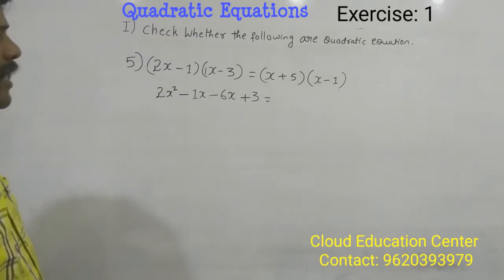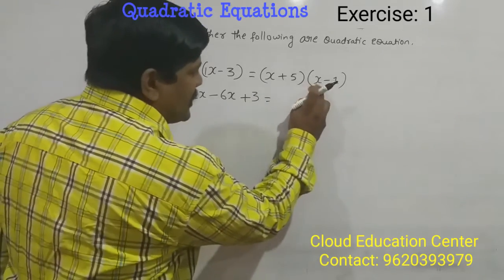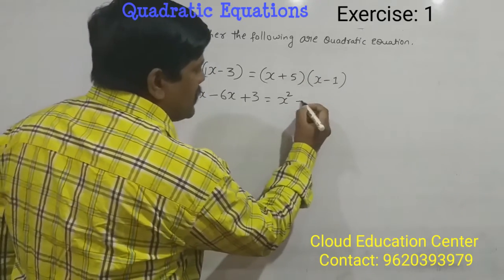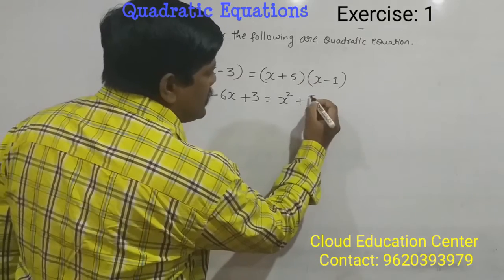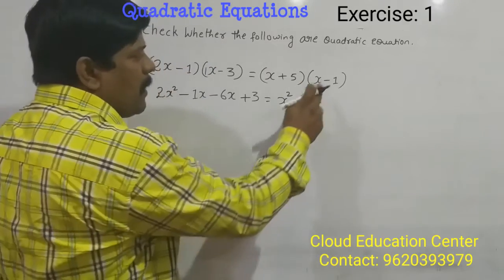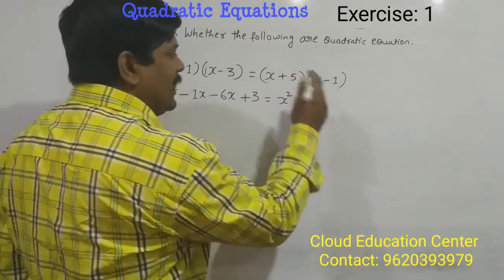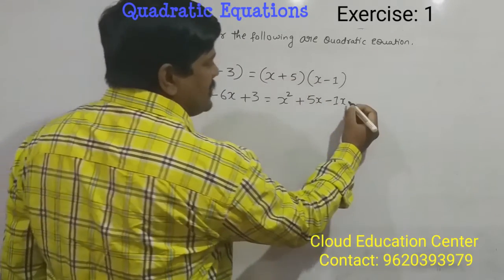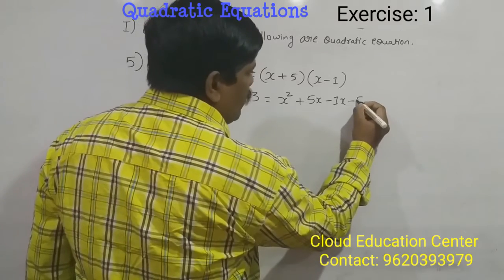So same way, you multiply here. x into x is x square and plus into plus is plus only, x into 5 is 5x. Minus into plus is minus 1x, and minus into plus is minus 5.